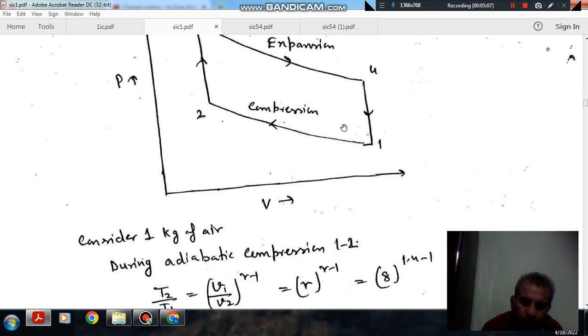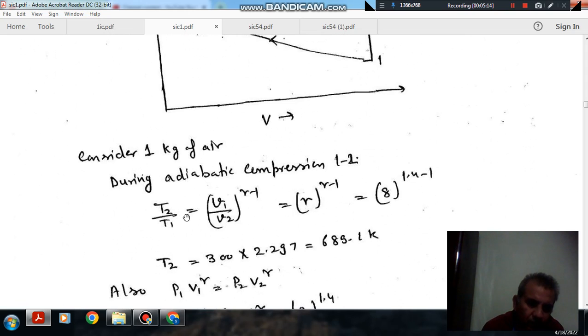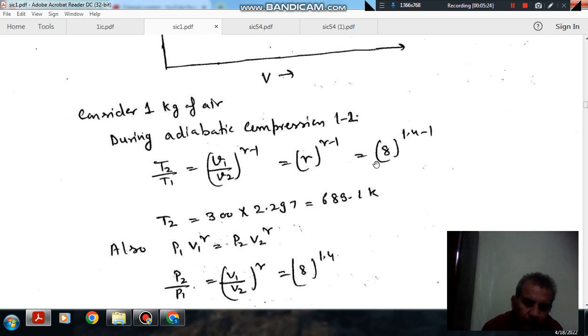Now, for process 1-2. As the process 1-2 is isentropic process. So, T2 by T1 is V1 by V2 to the power gamma minus 1. And V1 by V2 is 8. So, this is 1.4 minus 1. So, T2 is 300 into 2.297 or 688.1 K.